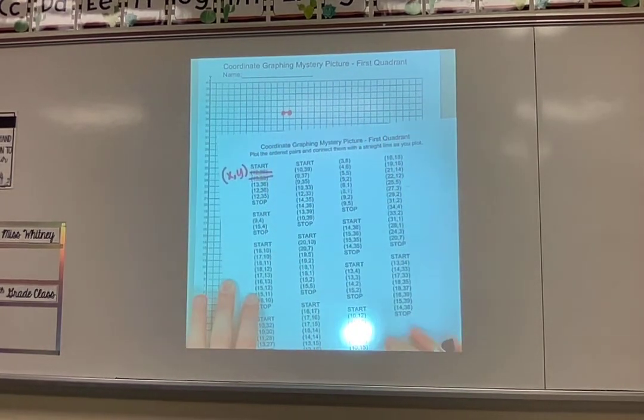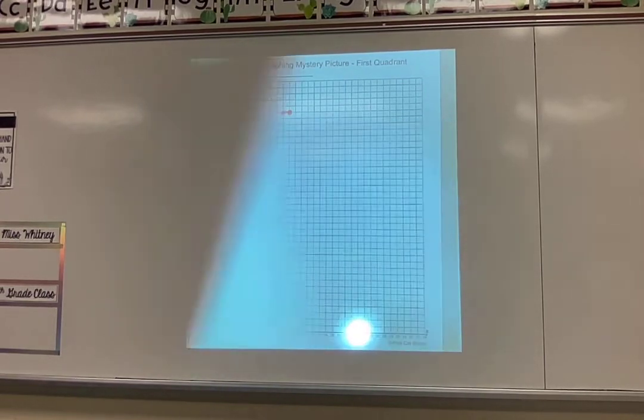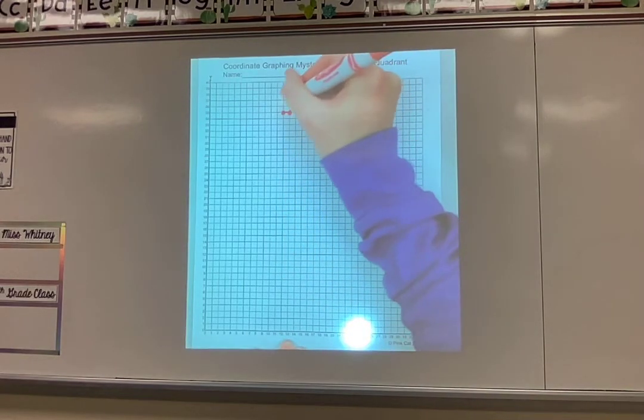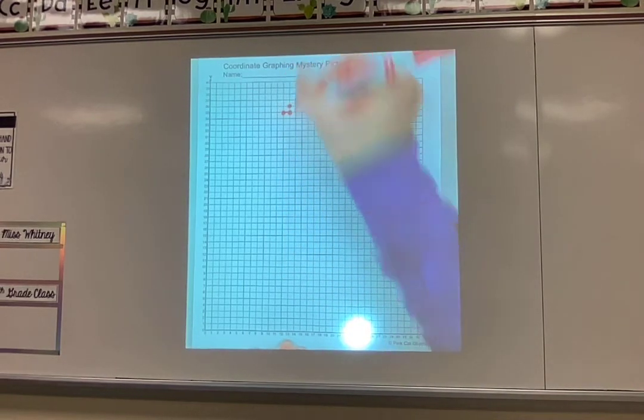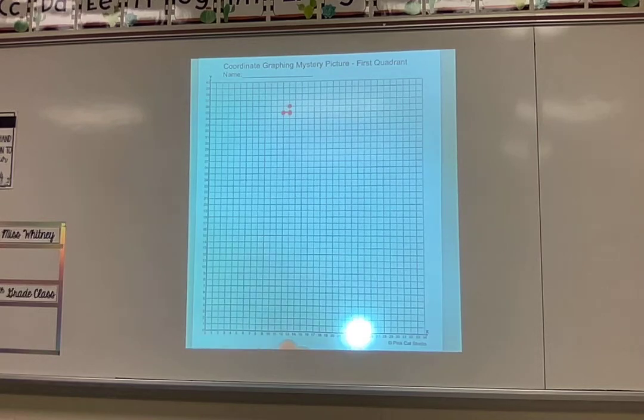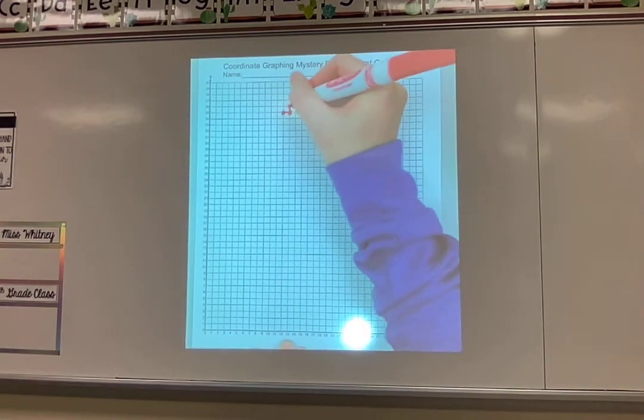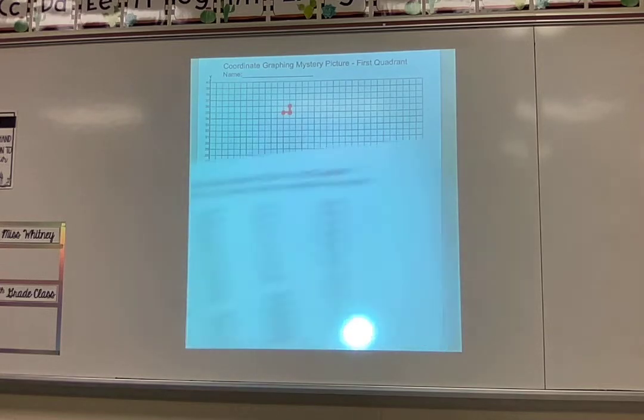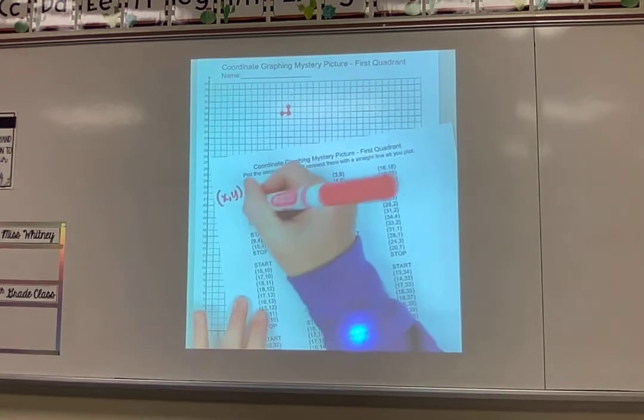Then I'm going to go to the next one 13, 36. I'm going to go across to 13 up to 36. Double check before you make your point. Make sure you have it in the right place. Play connect the dots there with that last point that I just made. So so far it looks like that. And then I'm going to cross that one off.